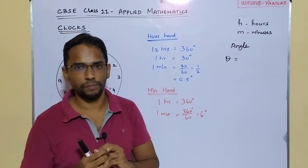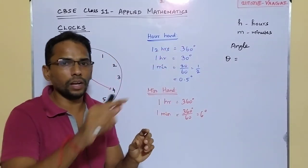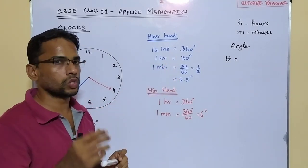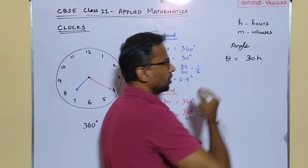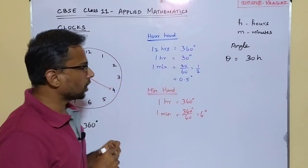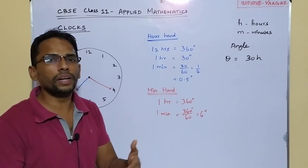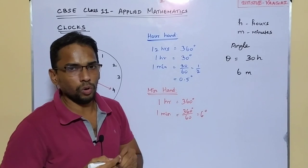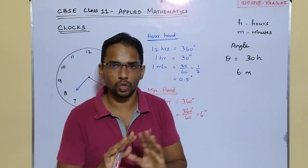Consider the time to be H hours and M minutes. For H hours, the hour hand sweeps 30H degrees (since 30 degrees per hour). For M minutes, the minute hand sweeps 6M degrees (since 6 degrees per minute). However, during those M minutes, the hour hand also moves. In 1 minute the hour hand covers 0.5 degrees, so in M minutes it covers 0.5M degrees. The difference in angular movement between the minute hand and hour hand over M minutes is 6M − 0.5M = 5.5M.